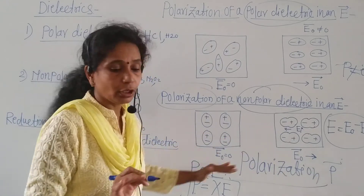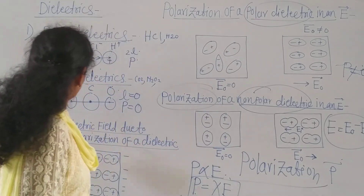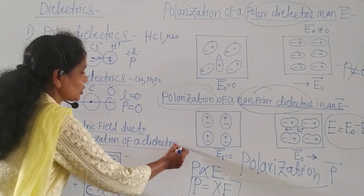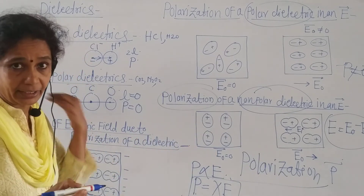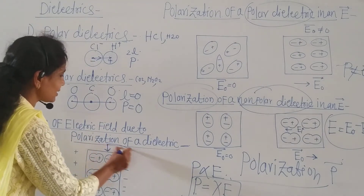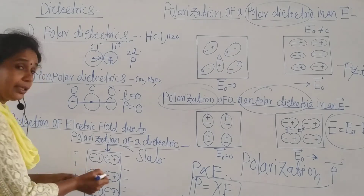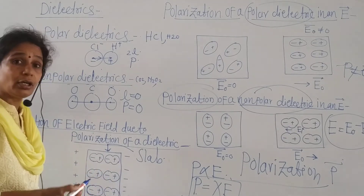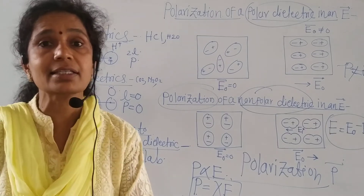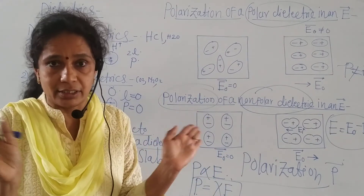This is all about polarization. The next point is the reduction of the electric field due to the polarization of a dielectric. Here we consider a dielectric slab, and an electric field is applied to it. What happens is that there is no actual motion of charges — only a slight rearrangement of charges within the atoms.